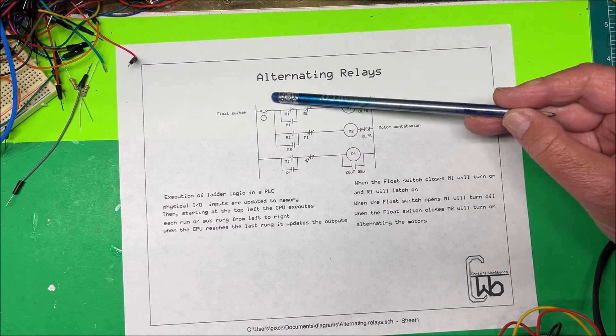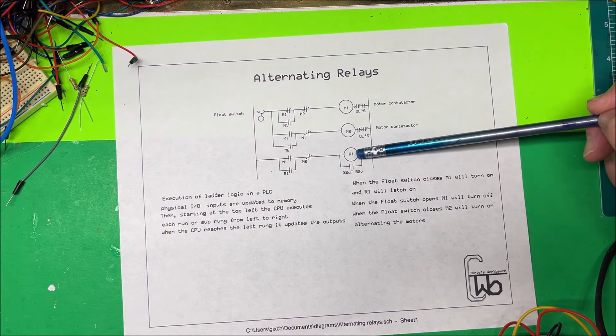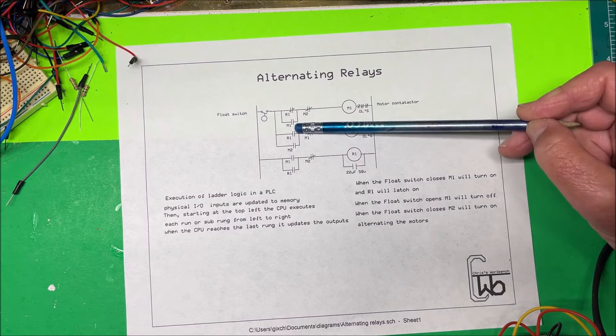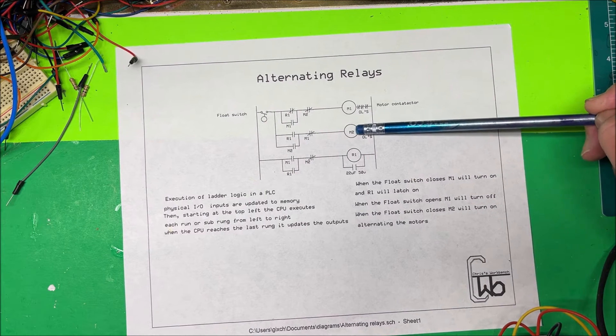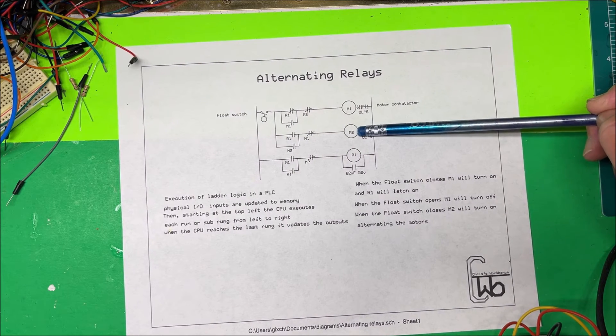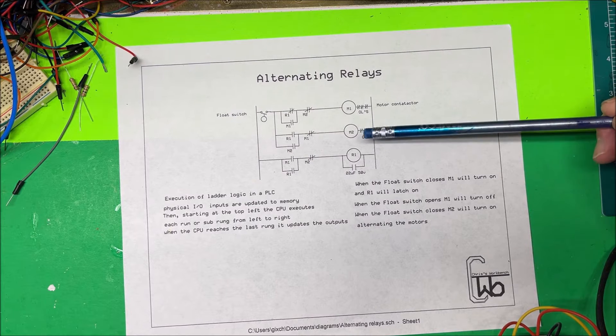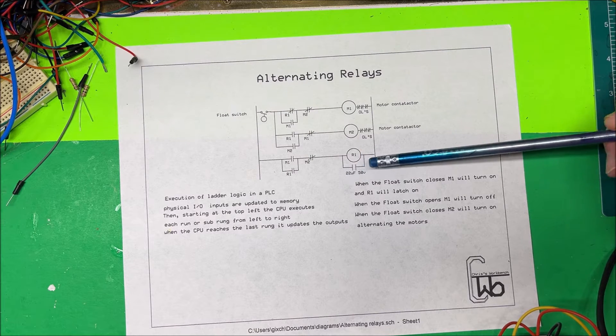As the water recedes, pump one is going to stop. Then the second time around when it comes back up, R1 here is closed, and the second pump is going to come on.